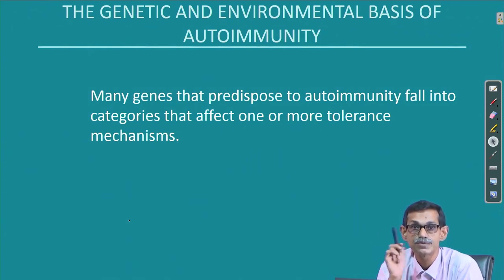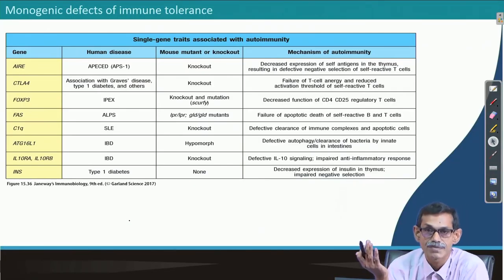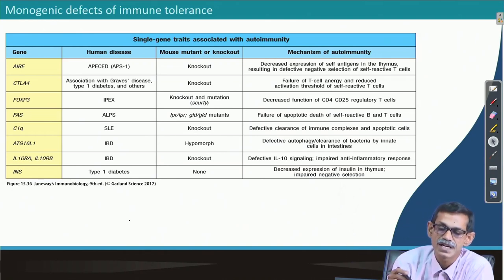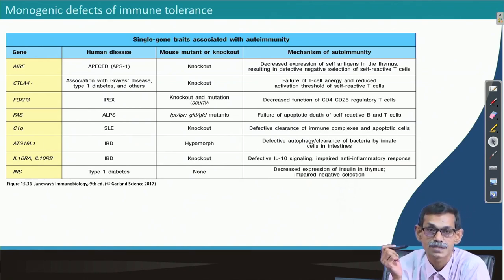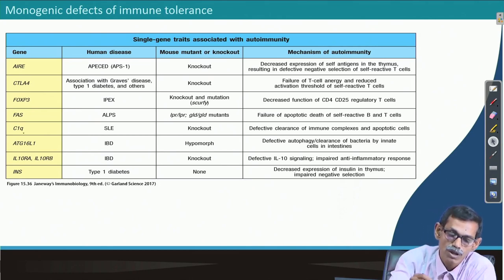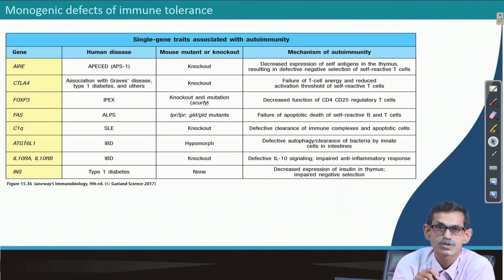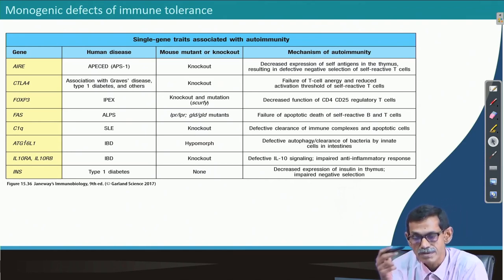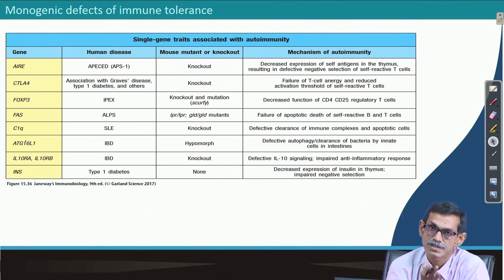Many genes that predispose to autoimmunity belong to categories that affect one or more tolerance mechanisms. Most of the responsible genes are common to immune system regulation — for example, CTLA-4 is a negative regulator of T cells; if it is absent, T cells are continuously active. Failure in these genes means self-tolerance is broken, leading to autoimmunity.